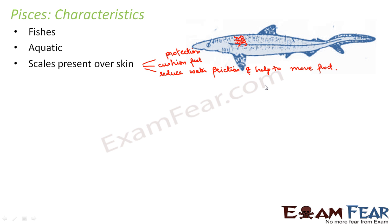The scales are present on the fish skin permanently — they are not shed as the fish grows old. When scales are seen under a microscope, they appear as concentric ring-like structures.